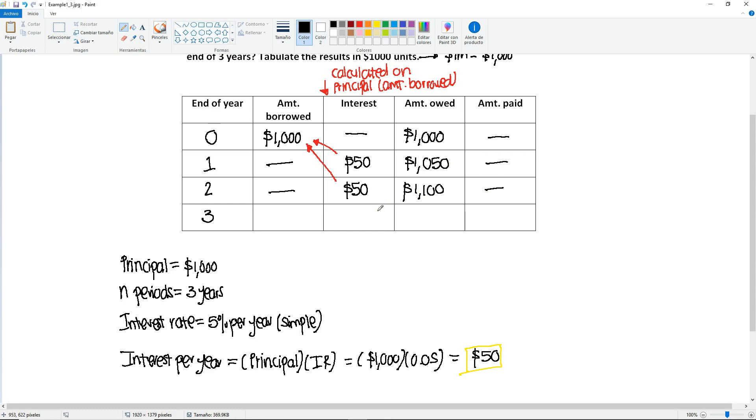Now, one year passes by, and we are at the end of the third year. We're not borrowing anything. Same scenario, so the interest continues to be calculated over the amount that was borrowed. So we have another $50 here. Here, they owe now the $1,100 from last year, plus $50 more, $1,150. And now they must pay this amount, the $1,150.